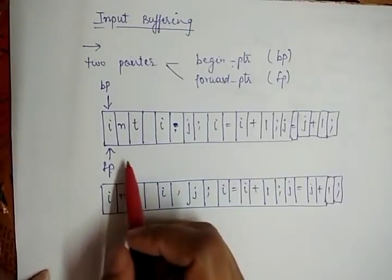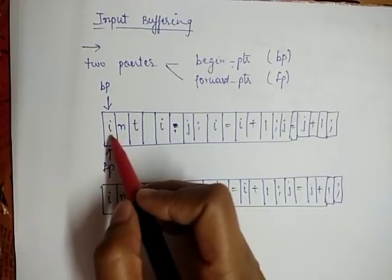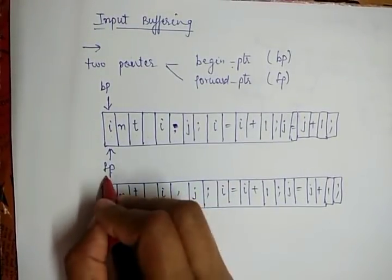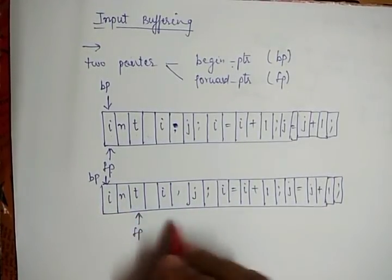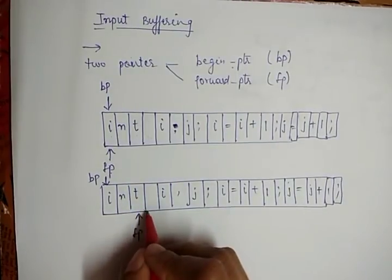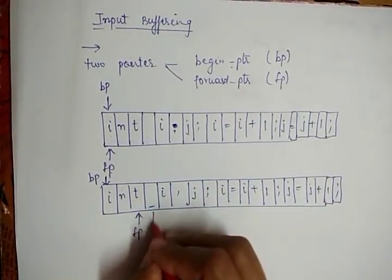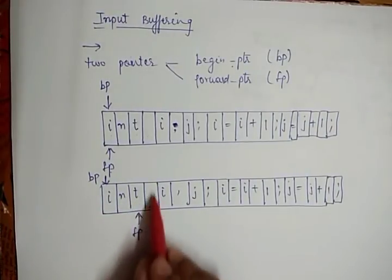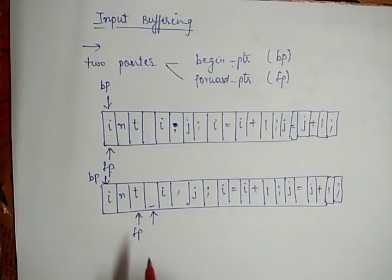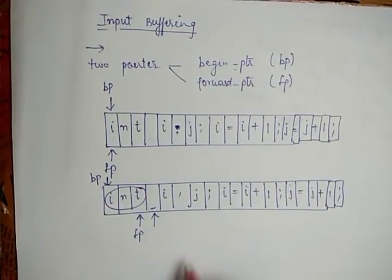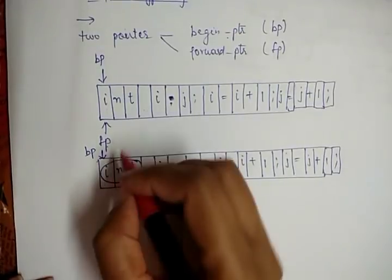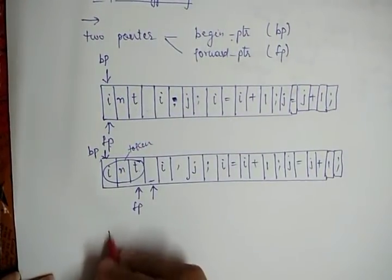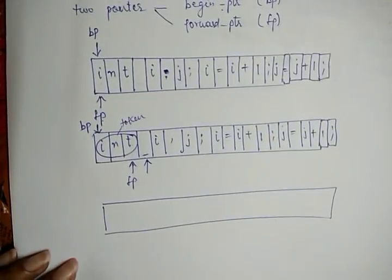Initially both pointers point to the very first character, which is 'i'. The BP remains the same and the forward pointer moves ahead to search for the end of the lexeme. As soon as the forward pointer encounters a blank space — like the space after 'int' — this shows that 'int' is identified as one lexeme, which is an identifier. This is the end of the lexeme, or we can say this is one token.